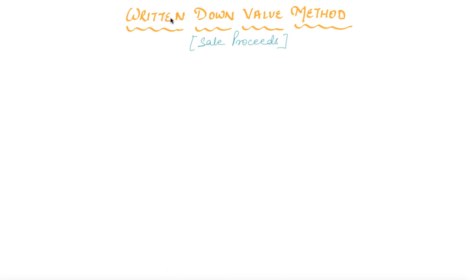Hello friends, till now we have read the straight line method in which we learned how to find out the rate of depreciation. In the second question we read how to compute the depreciation, how to prepare the machinery account and balance sheet, as well as when more than one machinery were given. Now in this question we will learn how to compute depreciation under the written down value method.